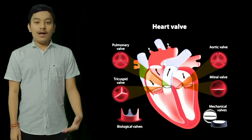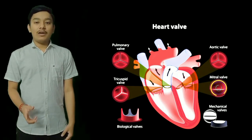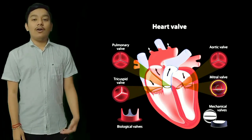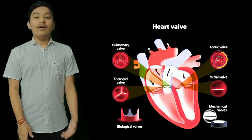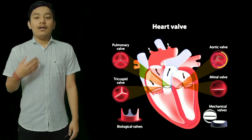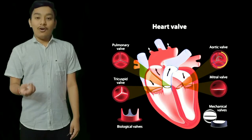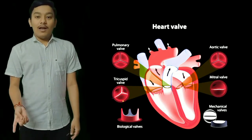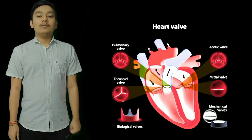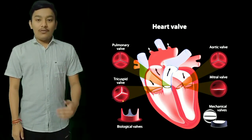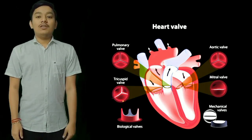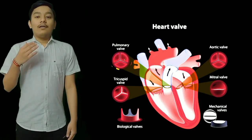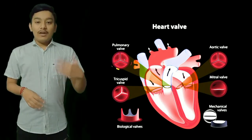The mitral valve is located between the left atrium and left ventricle. The aortic valve is located between the left ventricle and aorta. The tricuspid valve is located between the right atrium and right ventricle. The pulmonary valve is located between the right ventricle and pulmonary artery.